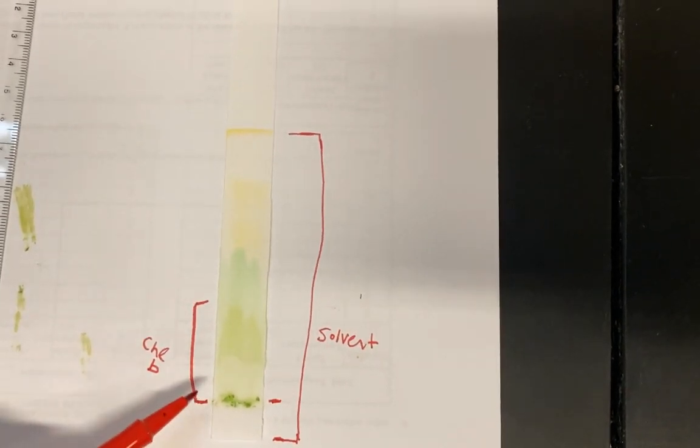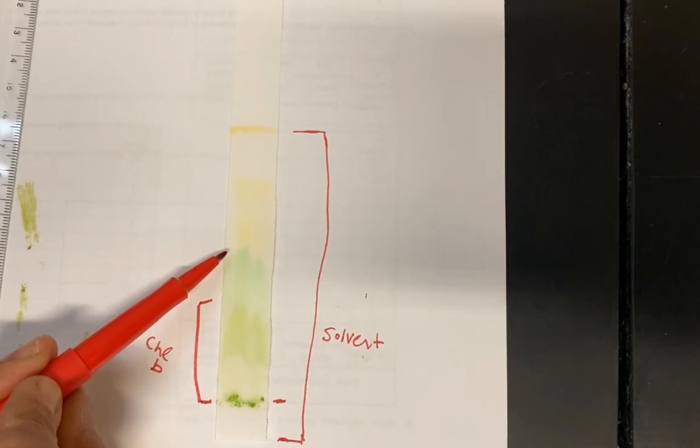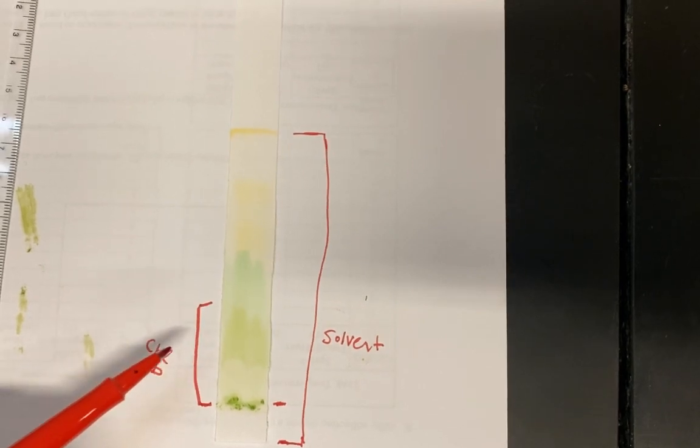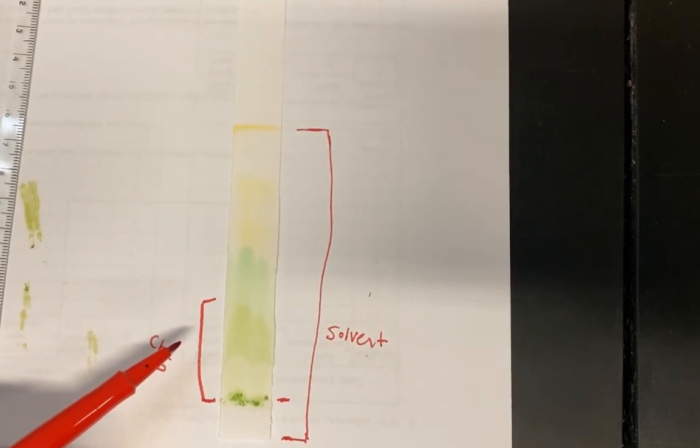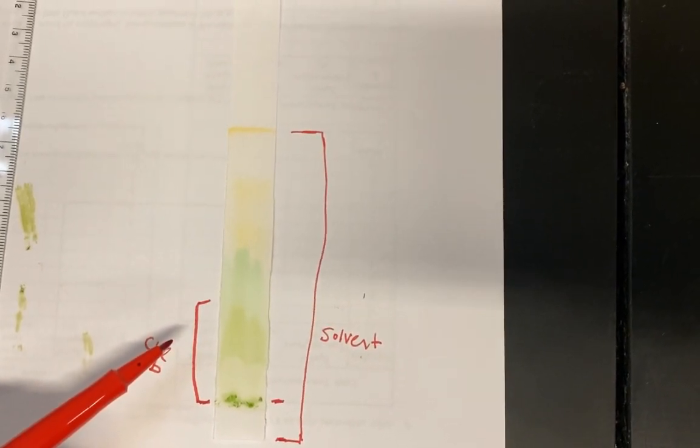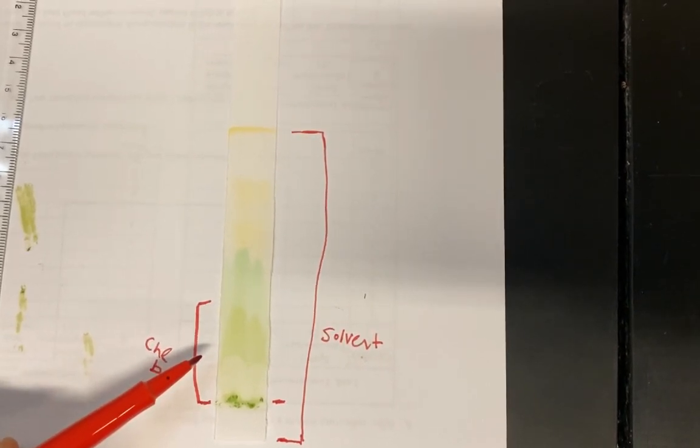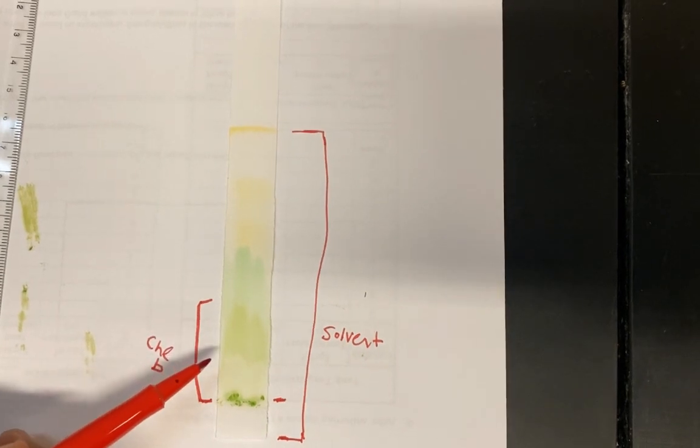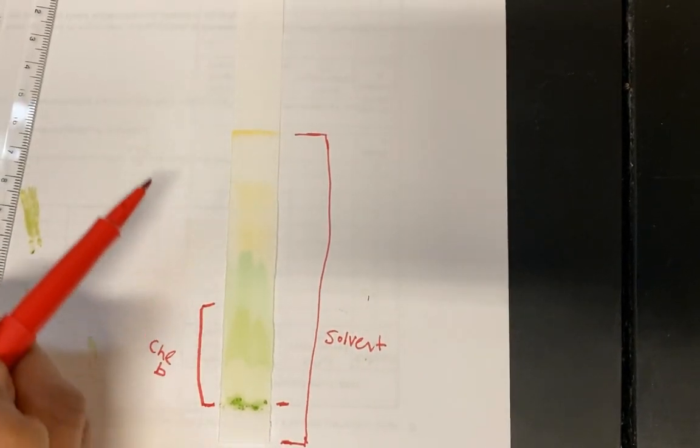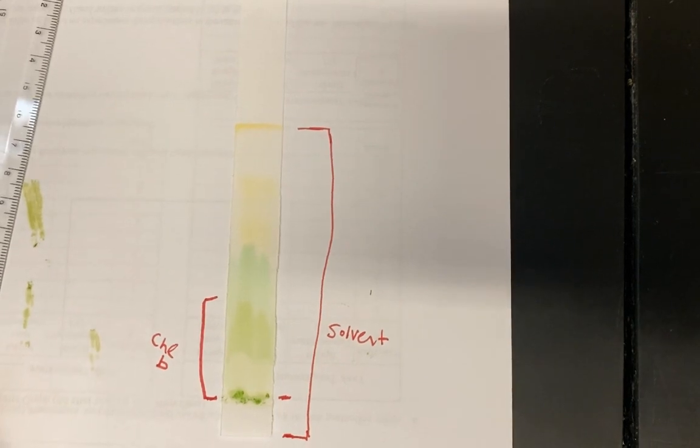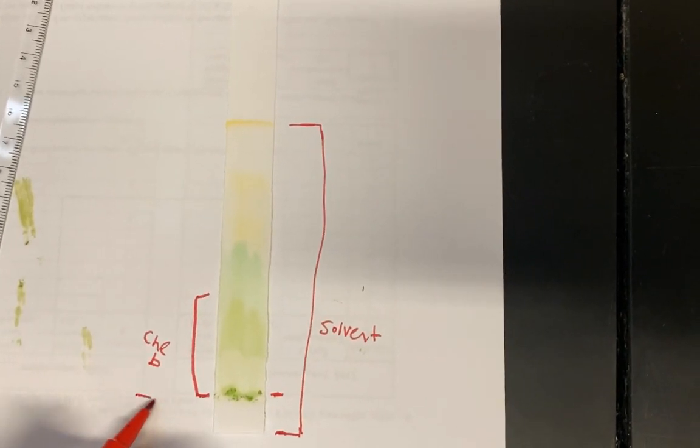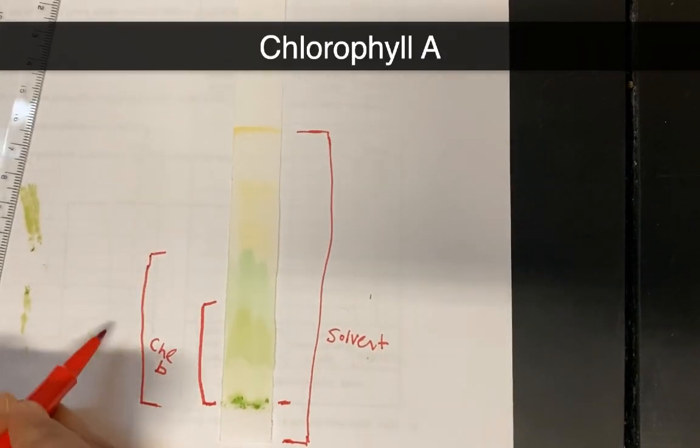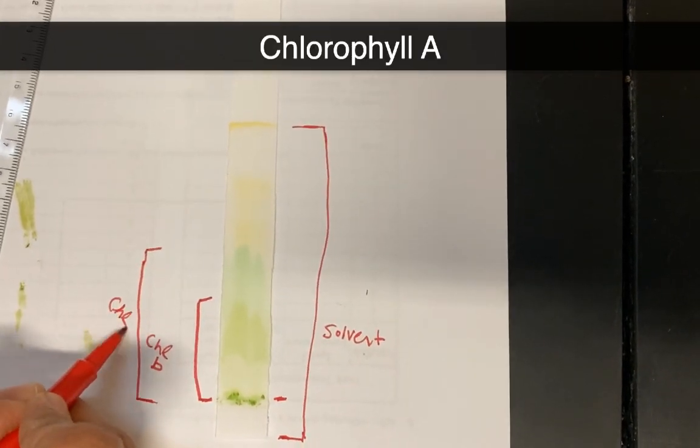And then it looks like chlorophyll A went up a little bit further. So if you remember by reading the lab, the paper is polar. The solvent is nonpolar. So if it's staying lower and sticking to the paper, then the solution, the pigment, like chlorophyll B, is going to be more polar. If it goes up higher, it's being carried by the solvent, and so it's more nonpolar. So my next one starts here, and it looks like it kind of goes to here. So that's chlorophyll A.